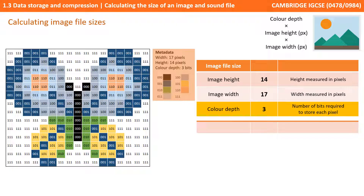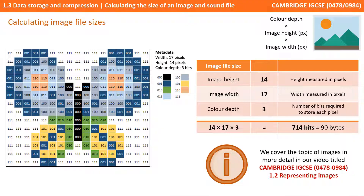We've got eight colours making up this image, and we can store eight different combinations with three bits — from 000 for black to 111 for white. That means every pixel is going to require three bits to store, so we have a colour depth of three. What we end up with is 14 times 17 times 3, which is 714 bits. Dividing by eight gives us 90 bytes — so this image is taking up 90 bytes.